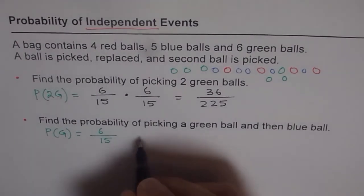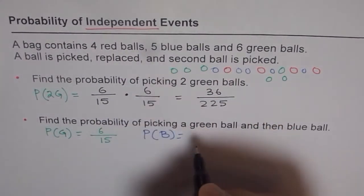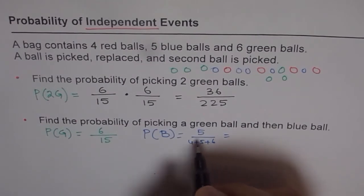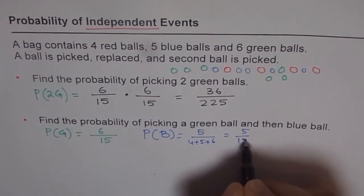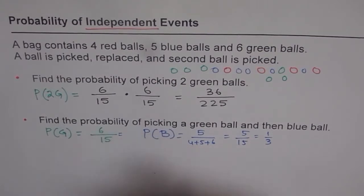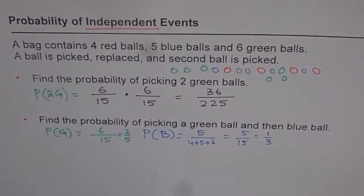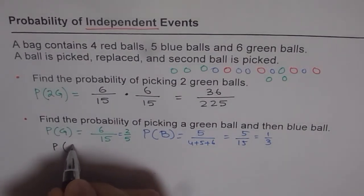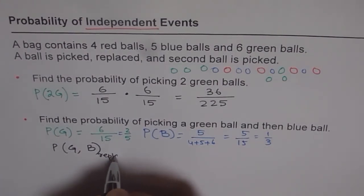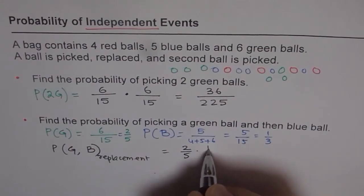Now, for the second pick, what is the probability of picking a blue ball? There are 5 blue balls out of a total of 4 + 5 + 6 = 15. So it is 5/15, which simplifies to 1/3. And 6/15 simplifies to 2/5. The probability of picking green and then blue, with replacement, is the product of these two: 2/5 × 1/3.